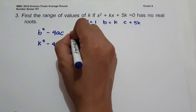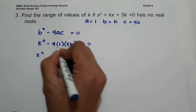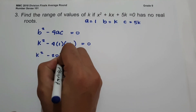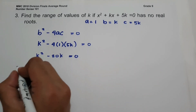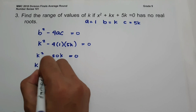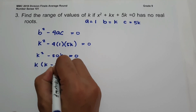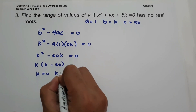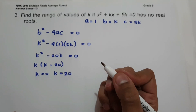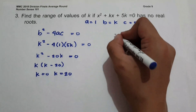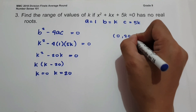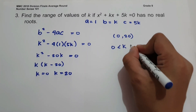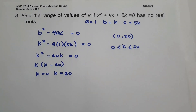Setting the discriminant less than zero and solving: k squared minus 20k equals 0. Factoring out k gives k times (k minus 20) equals 0, so k equals 0 and k equals 20. Therefore, the range of values of k is between 0 and 20, exclusive — or written as 0 is less than k is less than 20. This will be our answer.